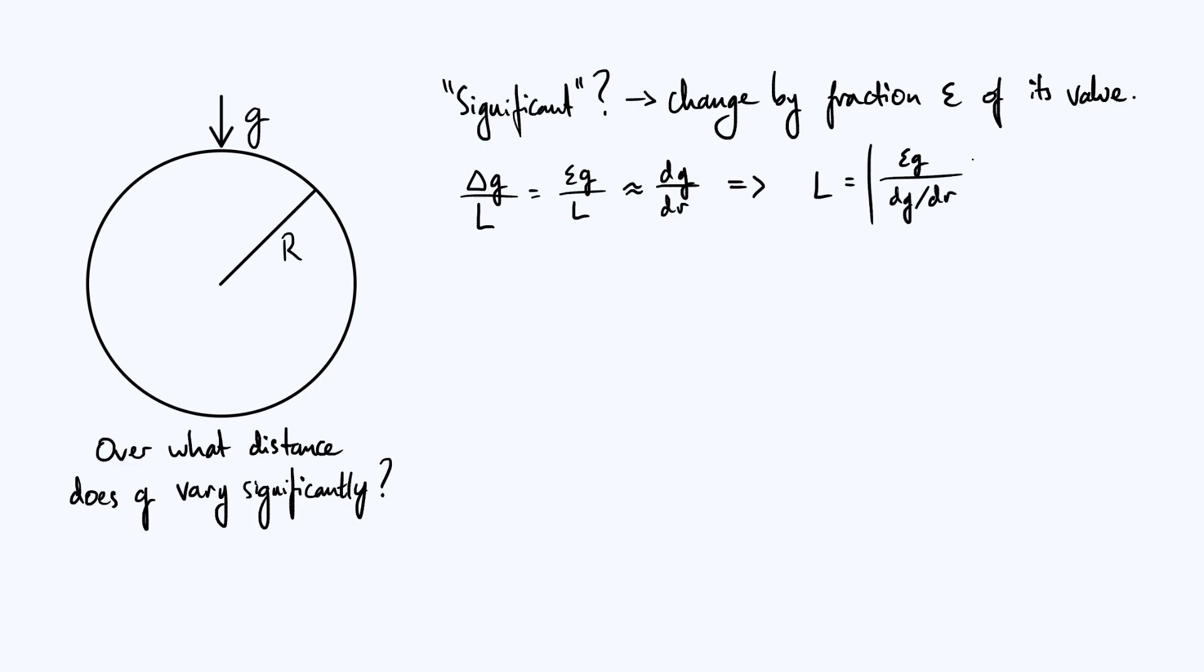I'm also going to put modulus signs around this because of course g is actually decreasing with distance from the center of the earth, but we don't really want that to affect our result. We just care about the size of the length scale.